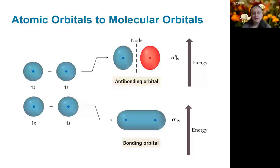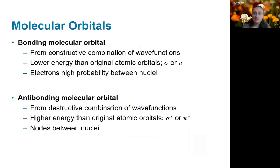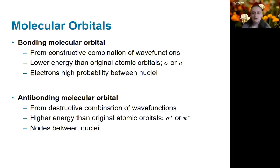If we think about the two 1s functions for two hydrogen atoms, they can interact in a positive manner, forming a bonding orbital, or in a negative manner, forming an anti-bonding orbital. The positive interaction where the 1s orbitals are in phase leads to the lower energy bonding orbital, and when they're out of phase, it leads to a higher energy anti-bonding orbital. Every interaction of atomic orbitals leads to a bonding and an anti-bonding molecular orbital. The bonding orbitals result from the constructive combination of orbitals and correspond to sigma or pi bonds, with a high probability of the electron being found directly between the nuclei. Anti-bonding molecular orbitals result from the destructive combination of the atomic orbitals and are labeled as sigma star or pi star. These orbitals have nodes, or regions with no probability of finding the electrons between the nuclei.